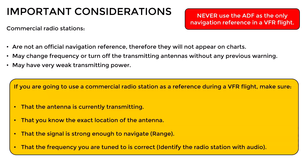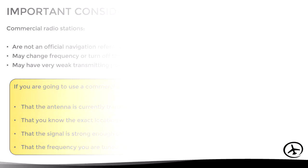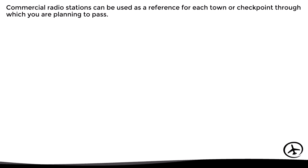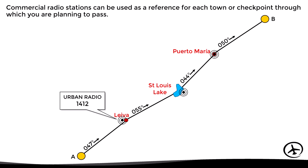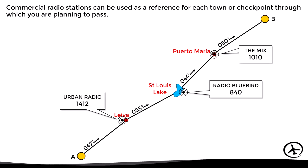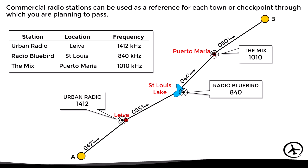Now, if all the checkpoints on the route are towns or cities, it is very likely that each of them has at least one AM radio station. So in practice, it is as if we had an NDB at each of the checkpoints. If the pilot sets the ADF correctly on each leg, the needle will literally point to the next checkpoint on the route, making it less likely to get lost or deviate from the route.